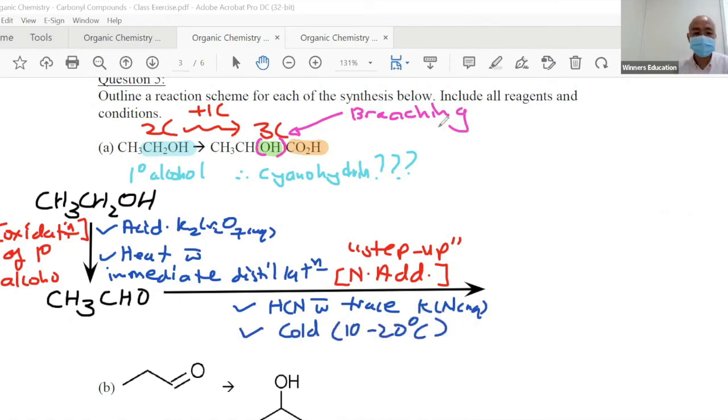So you get a cyanohydrin which looks like this - it's a branched molecule, tetrahedral in shape. Carbon increases by one. So again, this is a branched structure, or this is a cyanohydrin which is branched.